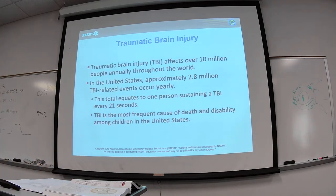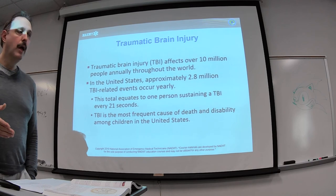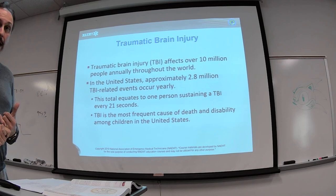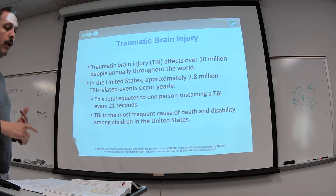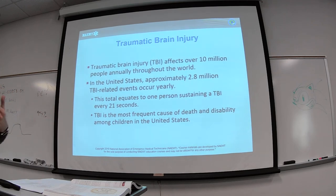When looking at traumatic brain injuries, about 10 million people are affected annually throughout the world — that's about 750,000 people per month. In the United States alone, 2.8 million people are affected annually by a traumatic brain injury of some kind, whether it be a massive hemorrhagic bleed with permanent brain injury or one they recuperate from. By the time we finish this lecture, someone will suffer a TBI every 21 seconds.